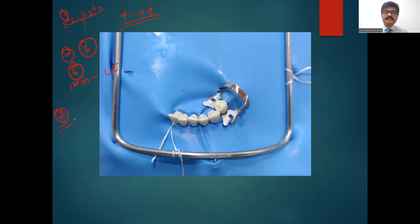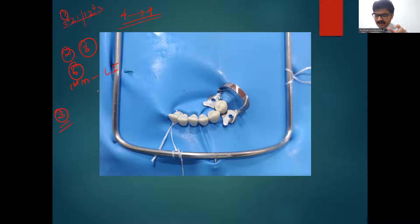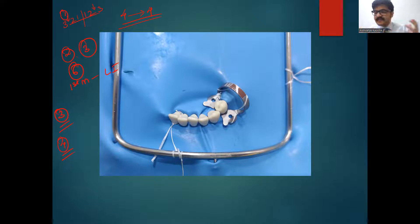For premolars, preferably isolate at least two teeth distal. That means if performing a procedure on a first premolar, I should isolate the second premolar (that's five), the first molar (that's six), and on the opposite side go to the lateral incisor. For molars, the key tooth is the lateral incisor of the opposite arch, and the anchor tooth as distally as possible. If my eight is well erupted and I'm working on the first molar, I should clamp the eight. If eight is not there, I clamp the seven and go to the opposite side lateral incisor.